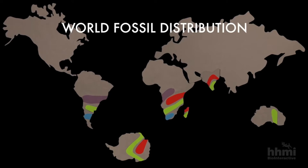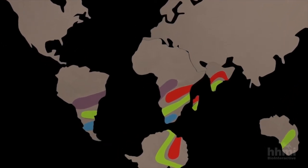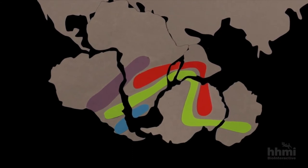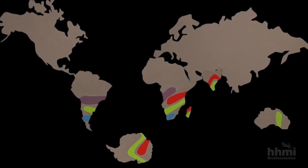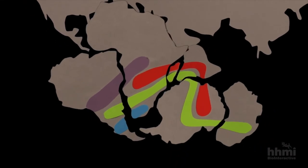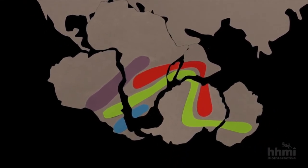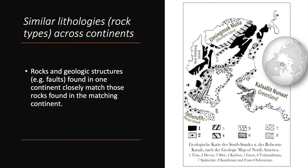This idea of continents drifting especially explains the distribution of the fern fossil, which can't move and has a very limited dispersal mechanism, and also for reptiles that can't swim large distances across the ocean. The next evidence for Wegener was similarities in rock types — sedimentary layers in South America and Africa — with lithologic and structural similarities of mountains in Atlantic Canada and Northern Britain, suggesting those rocks and geologic structures were once connected.